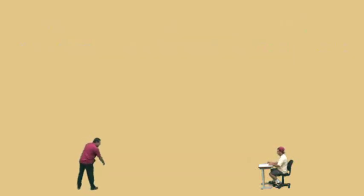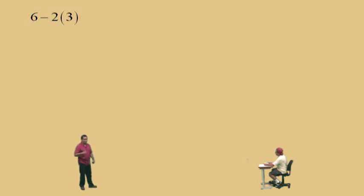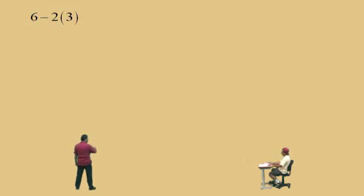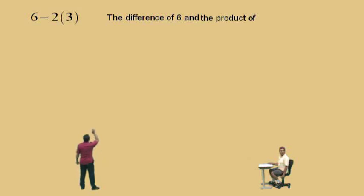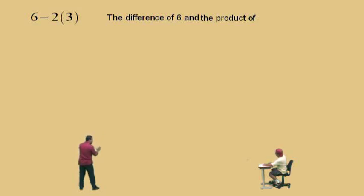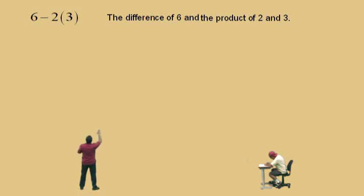Let's continue on. Now we have this one — don't get scared. There are actually two ways you can write this as a word statement, so just relax. We'll do this problem two different ways. What do you see — is this a difference, a product, a quotient, or a sum? You see a product and a difference. Let's start with a difference. It's a difference of two different things, Charlie — a difference of what? Six and a product. That's right — it's the difference of six and the product of two and three.